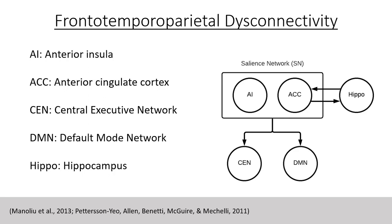Salience refers to the interestingness of stimuli. In thinking about this function, one can see the implications for abnormalities in this area with regards to hallucinations and delusions. While there is still ongoing investigation as to the mechanism of this network, the salience network has been implicated in the detection and integration of emotional and sensory stimuli. The salience network includes the anterior insula, abbreviated AI, which supports representations and updating of current and predictive salience, especially in the context of interoception.